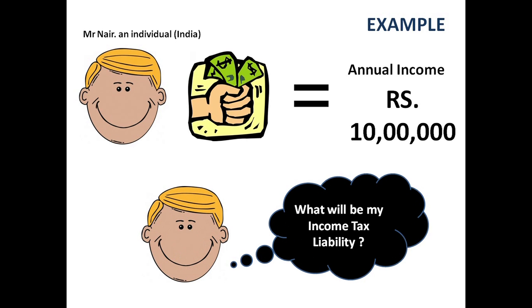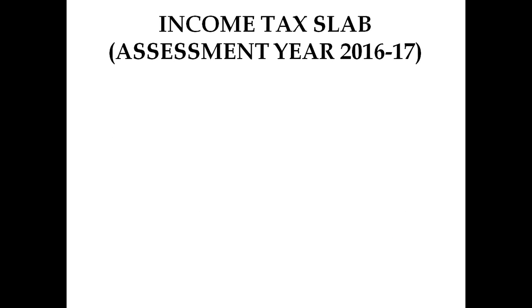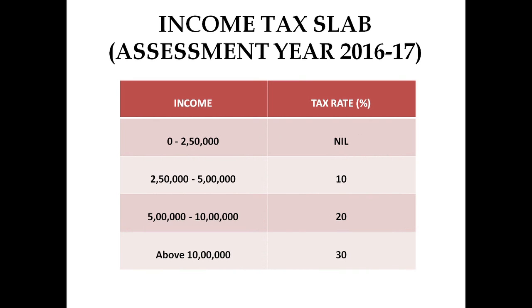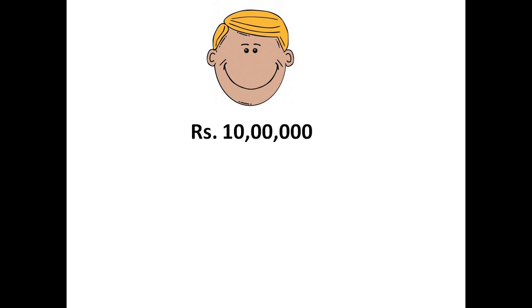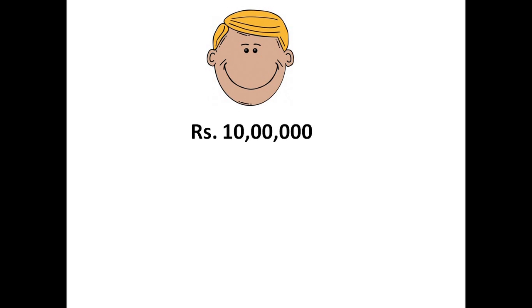Mr. Nair wants to know what his income tax liability will be, so let us help him calculate it. The income tax slab for Assessment Year 2016-17 is: income up to ₹2,50,000 — nil; ₹2,50,000 to ₹5,00,000 — 10%; ₹5,00,000 to ₹10,00,000 — 20%; and above ₹10,00,000 — 30%. Now let us calculate the income tax for Mr. Nair with an annual income of ₹10 lakh.